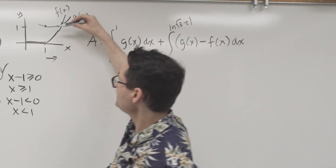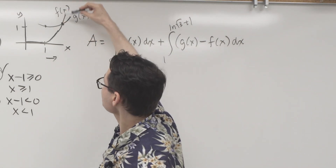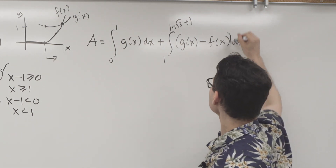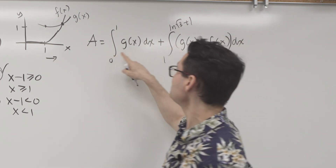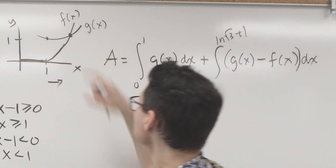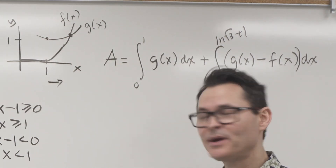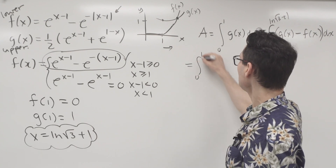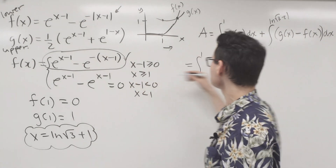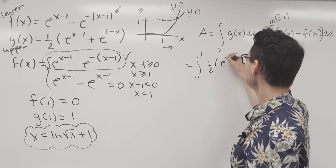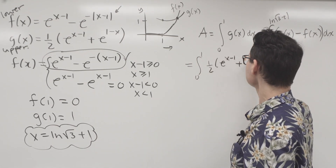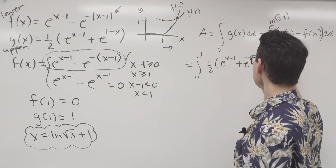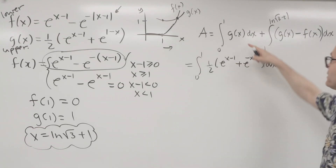So I'm going to take g(x) minus f(x). From 0 to 1, I just carry g(x). Let's plug the equations in. This is going to be the integral from 0 to 1 of (1/2)[e^(x−1) + e^(−x+1)] dx — there's my first integral.